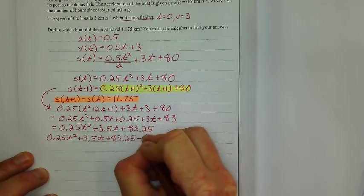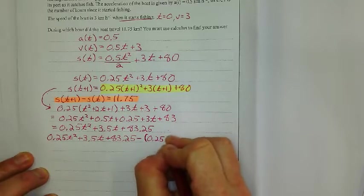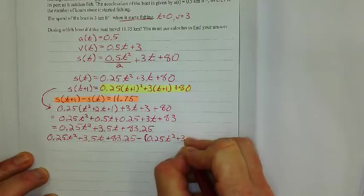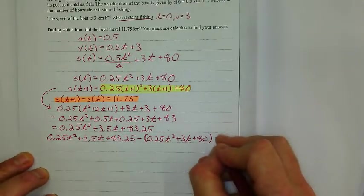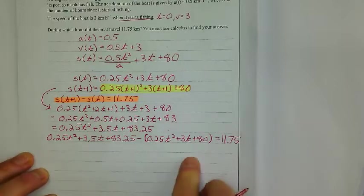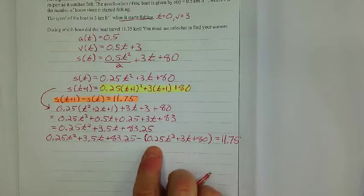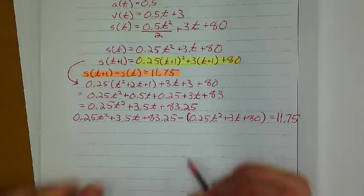is going to give me 11.75. Okay. So let's clean this up here. Let's collect all these like terms. I'm going to zoom in a little bit.